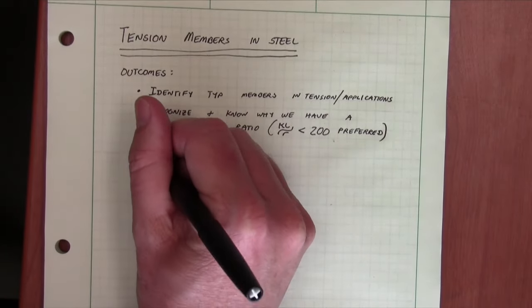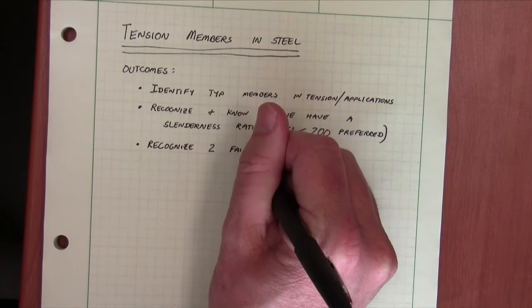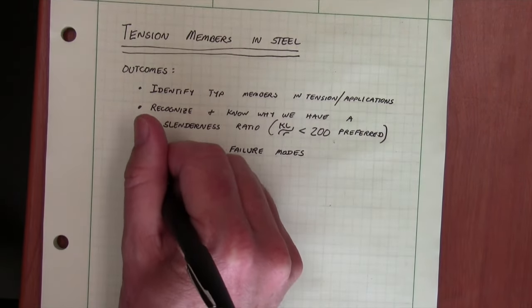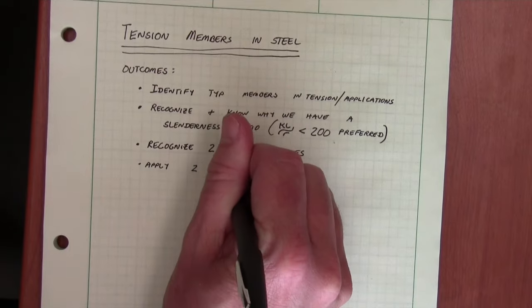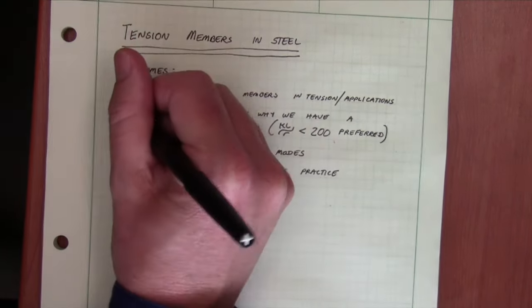Then we would like to recognize two fundamental failure modes of steel tension members and then take those failure modes and apply them in practice. So essentially there are four outcomes we'll number them to be specific.